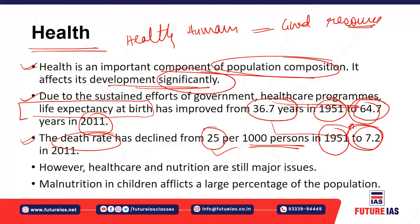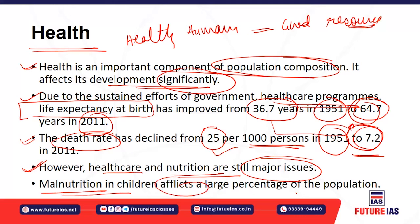The death rate declined from 25 in 1951 to 7.2 in 2001 — almost a one-fourth reduction. Healthcare and nutrition are major issues for this declining death rate. Malnutrition affects a large percentage of children — almost half of children face malnutrition with micronutrient and nutrient deficiencies, sometimes called hidden deficiency. Other problems such as obesity, lifestyle diseases, and non-communicable diseases are also increasing.